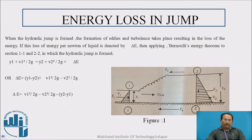Let us see how the energy loss takes place. When the hydraulic jump is formed, the formation of eddies and turbulence takes place resulting in the loss of energy. If this loss of energy per newton of liquid is denoted by delta E, then applying Bernoulli's energy theorem to section 1,1 and 2,2 in which the hydraulic jump is formed.